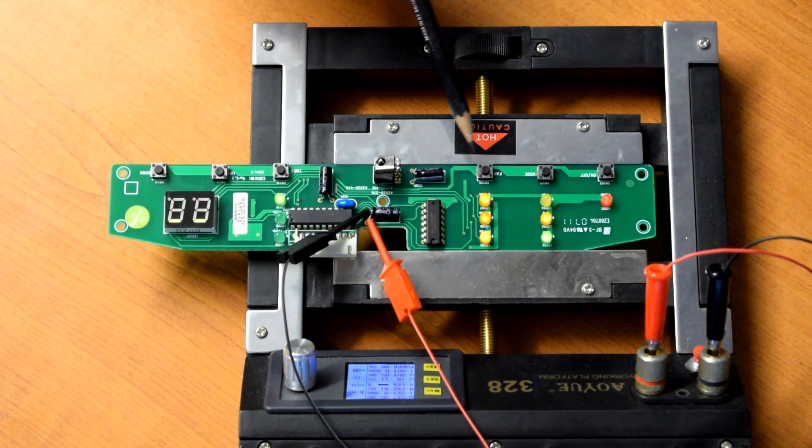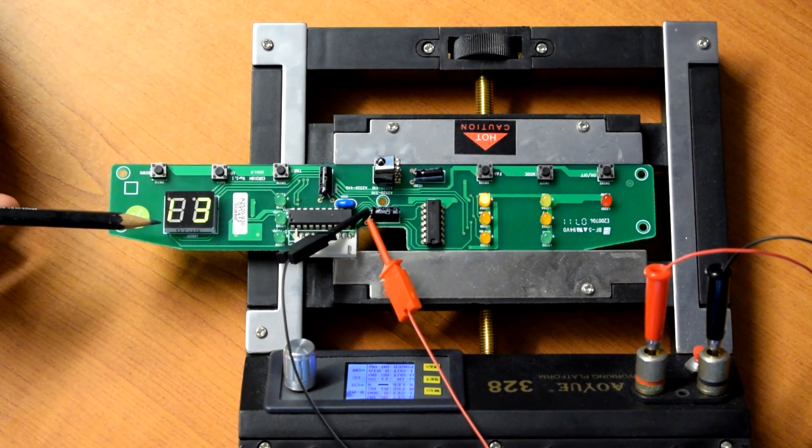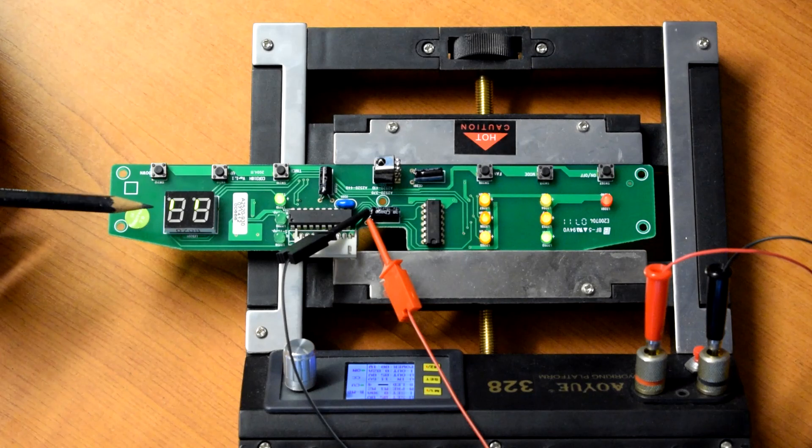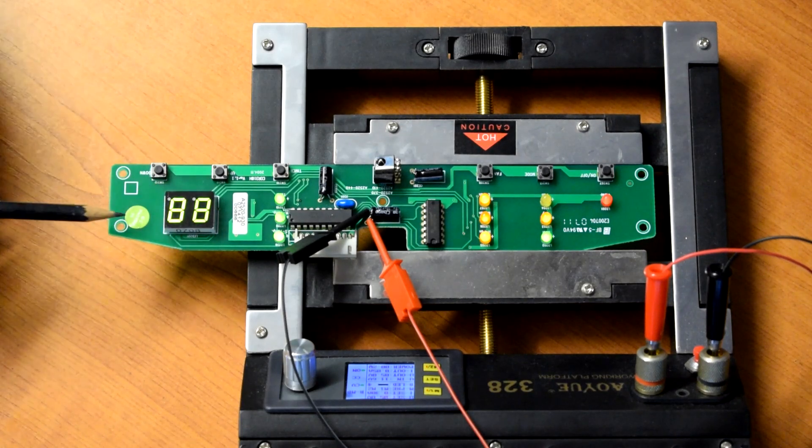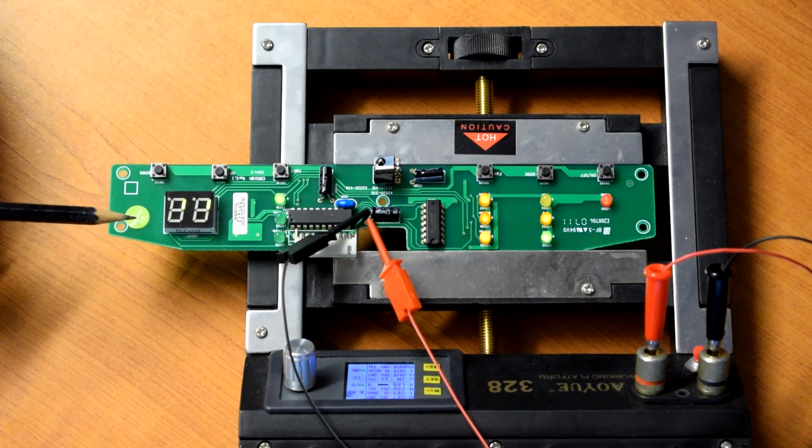We've got some little tactile buttons down here, a 2 digit 7 segment display, and this just displays the set point temperature or the room temperature depending which mode it's in.